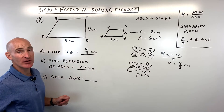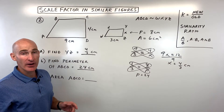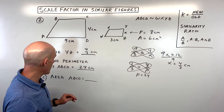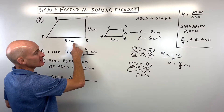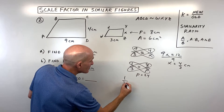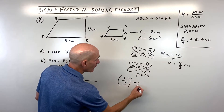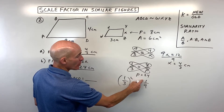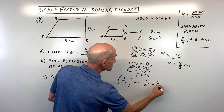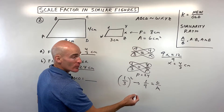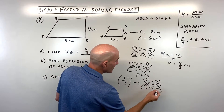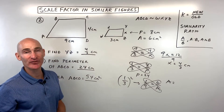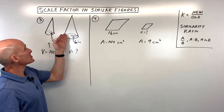For part c, we find the area of trapezoid ABCD. Area is two-dimensional, so we take the side ratio of one to three and square it, giving a ratio of areas of one to nine. The smaller figure has area six; let the larger figure's area be A. Cross multiplying: nine times six = 54, and A times one = A. So A = 54 centimeters squared for the area of the larger figure.